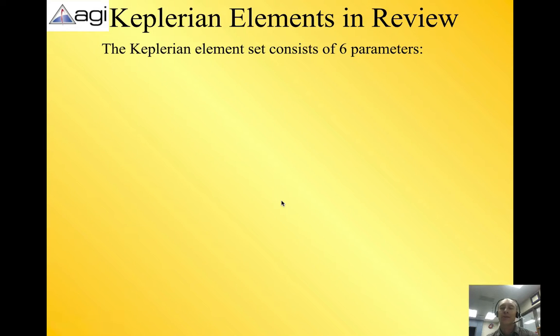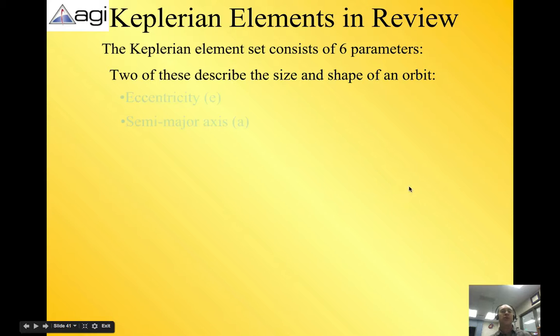So, Keplerian elements in review. This would be a great time to just double check and note all these down. Make sure you have all these. There are two elements that describe the size and shape. They are eccentricity and semi-major axes. So those letters are E and A. So pause this, make sure you have that noted.